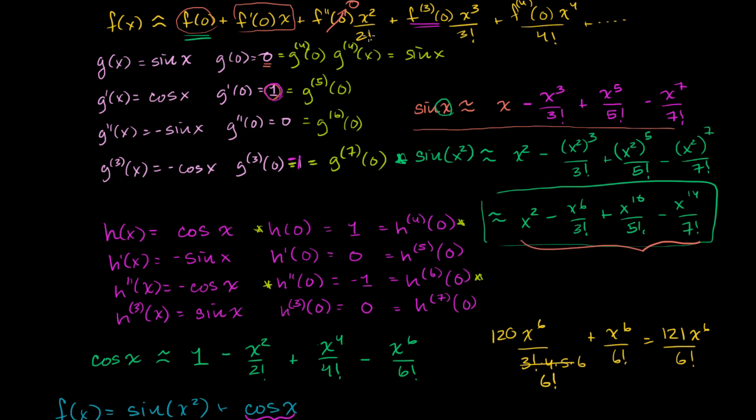You see that each degree term of the Taylor series, its coefficient is that derivative, and this Taylor series is centered around 0, and that's what we care about in terms of this problem. We see the coefficient is that derivative evaluated at 0 divided by that degree's factorial.